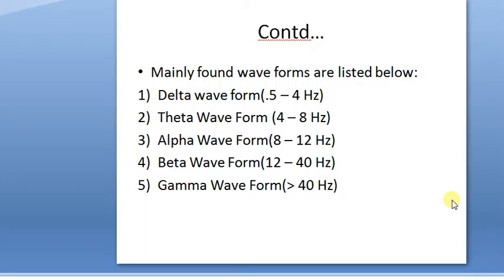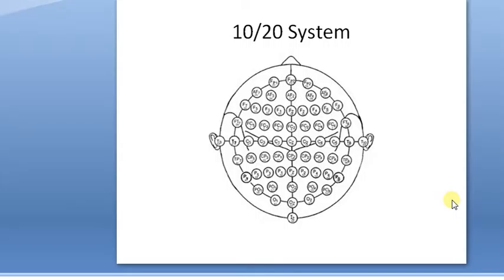The 1020 system is an electrode placement system which is internationally followed by all EEG test practices. The 10 and 20 numerals denote the distance between adjoining electrodes is either 10% or 20% of the overall front-back and right-left distance of the skull. There are various letters shown in this diagram, each for a specific type.